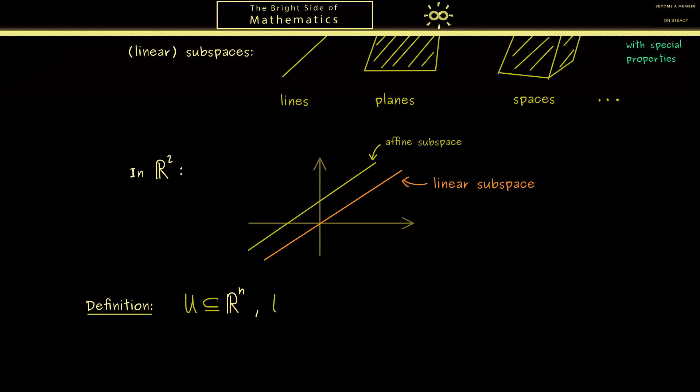And then we just consider any subset of the set Rⁿ and we call it U. However we immediately can exclude the empty set, because a subspace should never be empty.